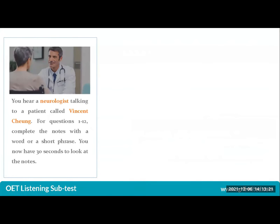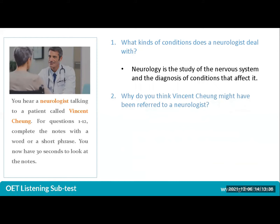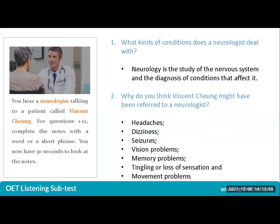In a neurology setting, the neurologist deals with the study of the nervous system and the diagnosis of conditions that affect it. The nervous system regulates and coordinates our body's activities. You will hear problems involving the brain, spinal cord, nerves, and muscles. Conditions commonly referred include dementia and Parkinson's disease. Expect discussions around sensations or lack of sensation, as well as pain and pain relief medications.